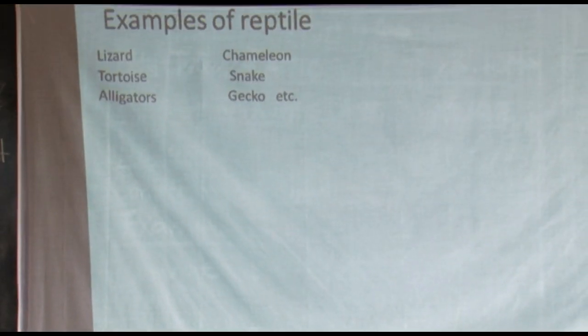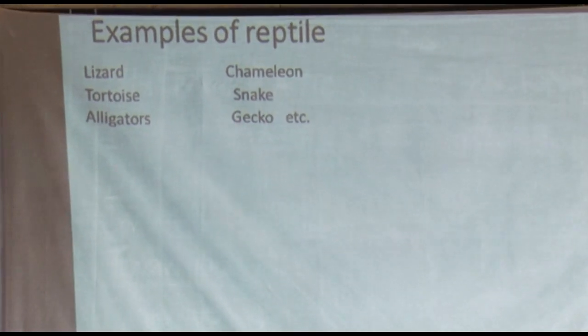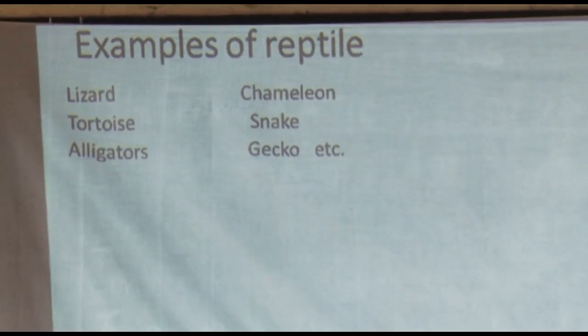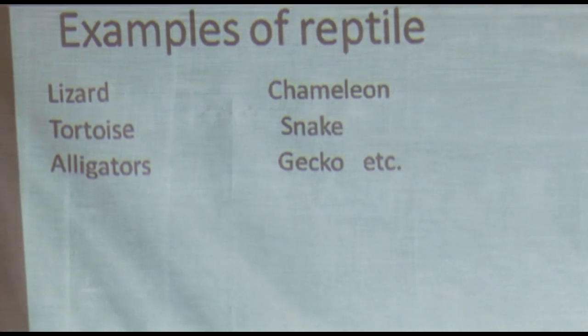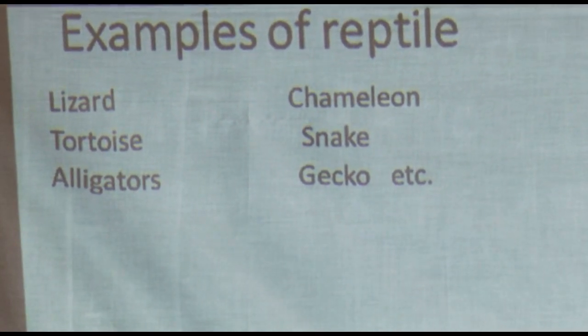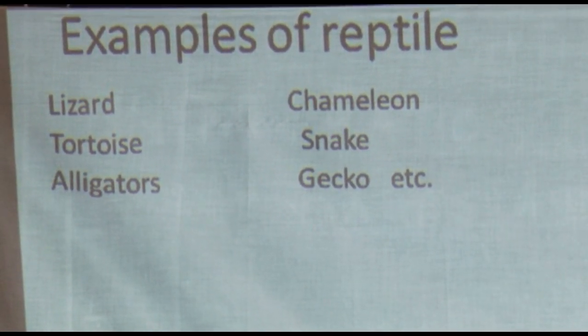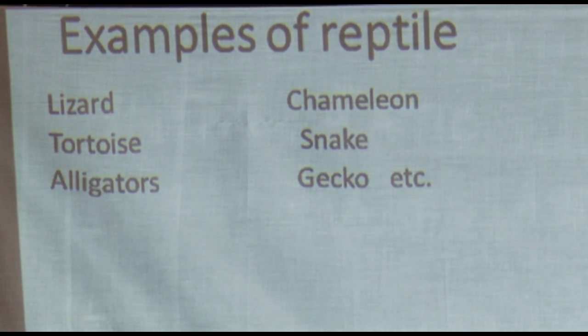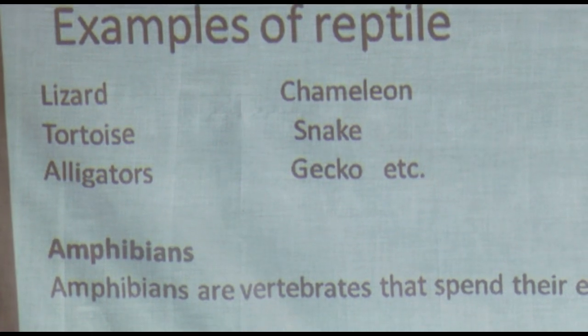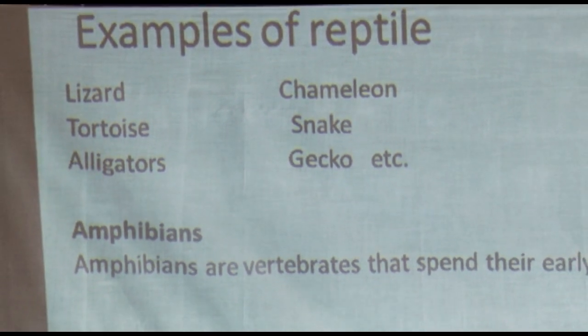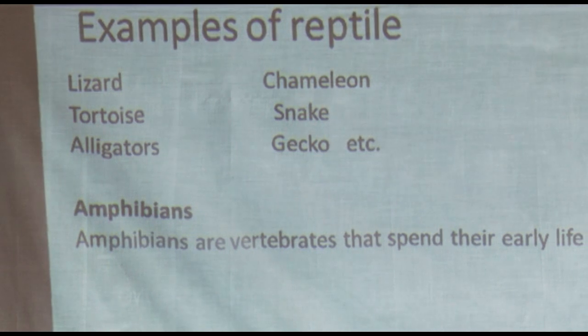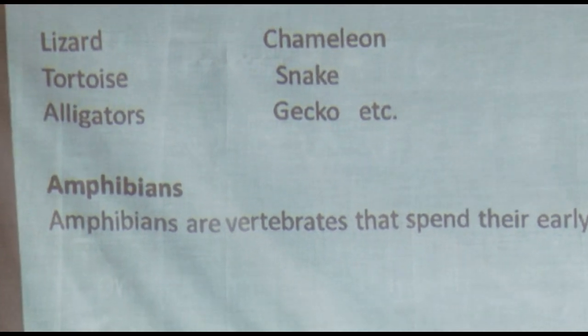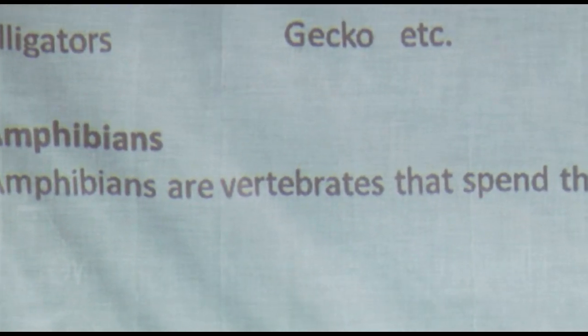We can now move ahead and check on examples of reptiles. You have the lizard, tortoise, chameleon, snake, gecko, and others. Remember to always check on the features. Having looked at reptiles, we can move ahead and look at the third subgroup of vertebrates, which is now the amphibians.